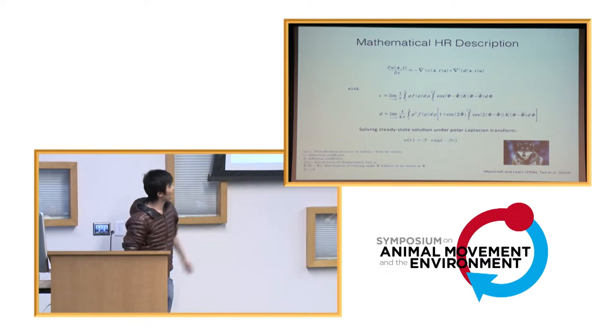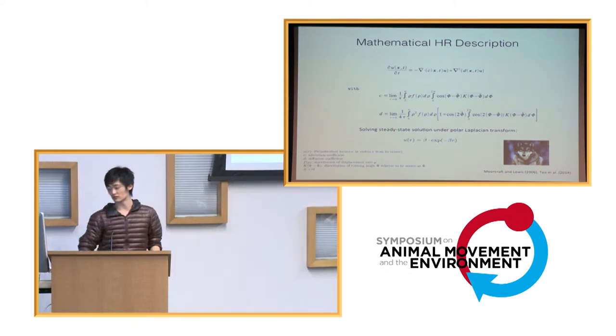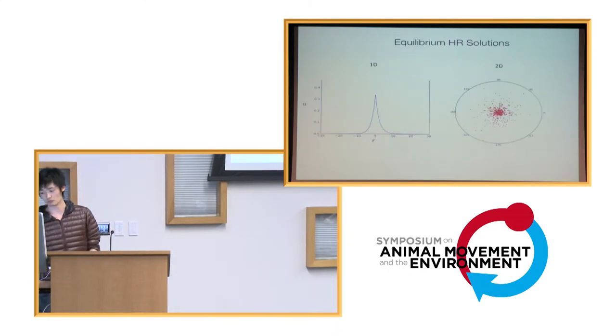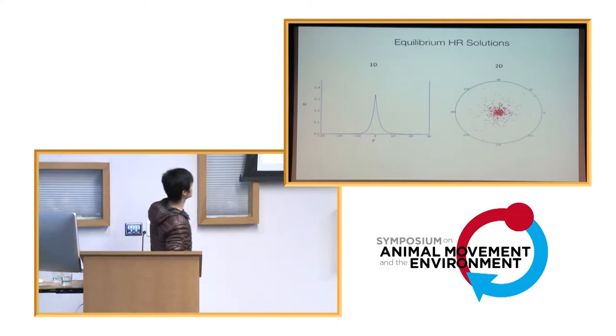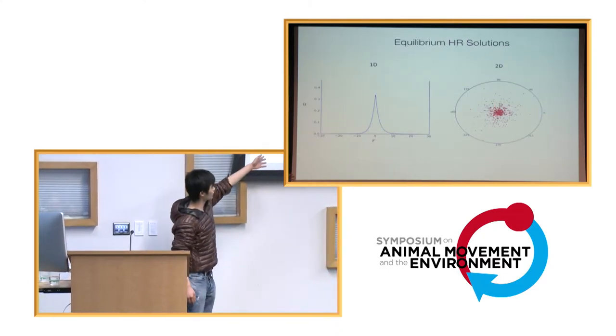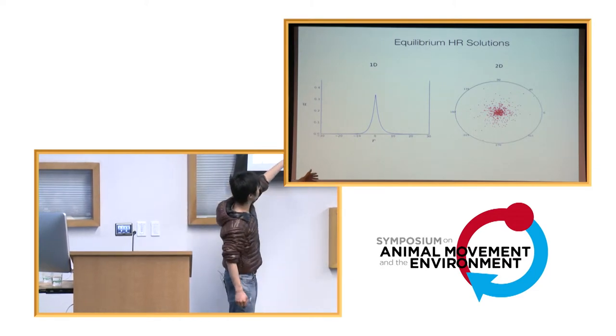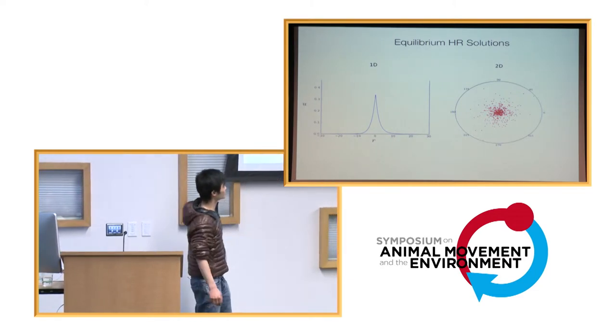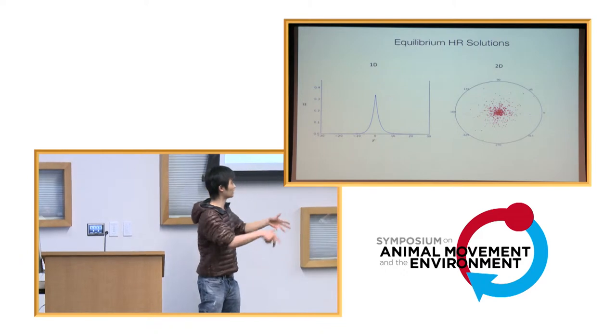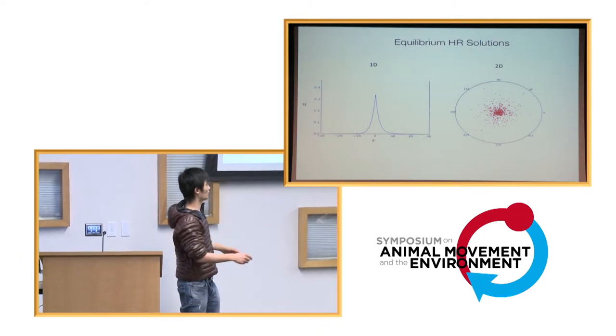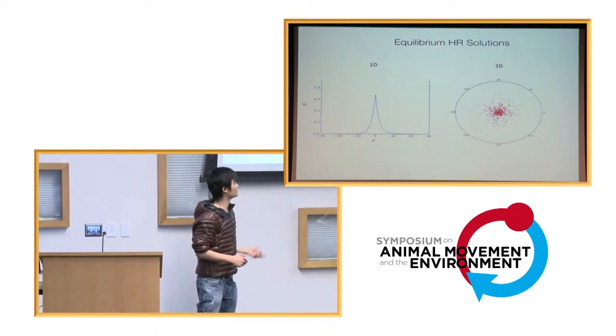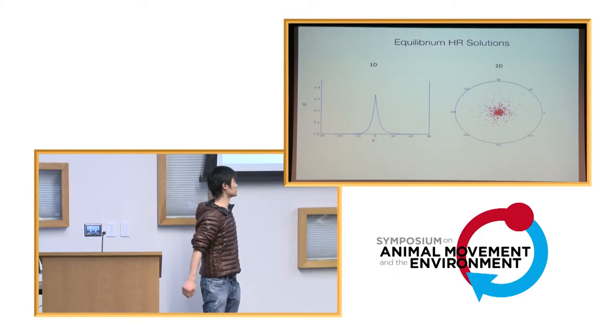So we have the solution down there, and as a result of this, one can conclude that in one dimensional space, you have this concentration at the home range center at zero, and in two dimensional space, you also have this aggregate probability density at the center. And usually this is the end of the story.